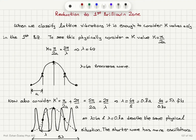Now we would like to take a look at the physical meaning of reduction to a first Brillouin zone. When we classify lattice vibrations, we said it is enough to consider k-values only in the first Brillouin zone. Solving the normal modes of a 1D monatomic Bravais lattice, we found that the k-values are periodic and only have discrete values in the first Brillouin zone, and then it's repeated.